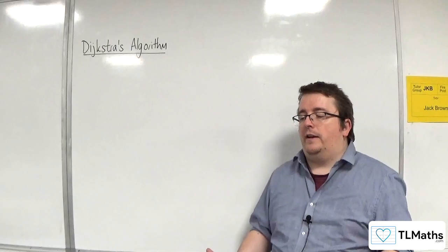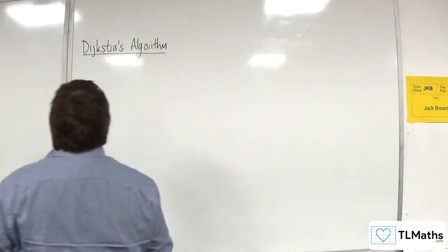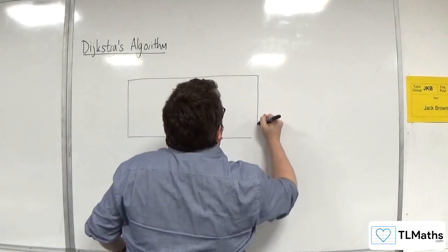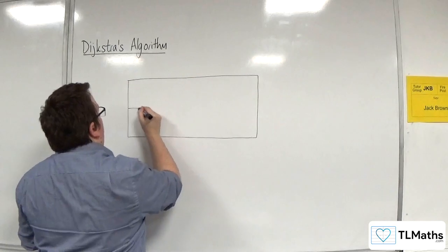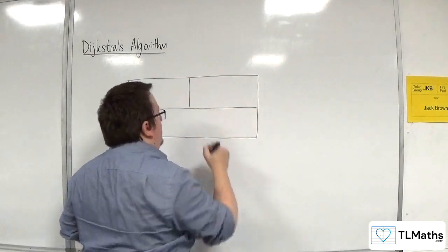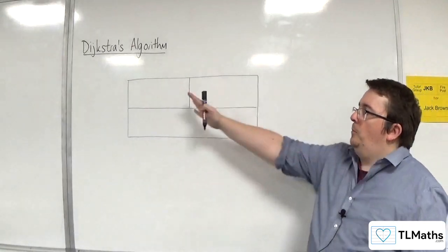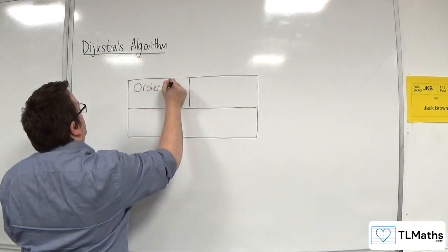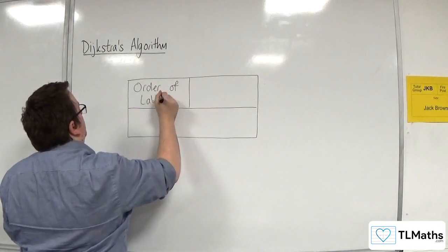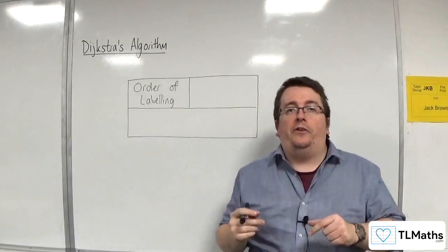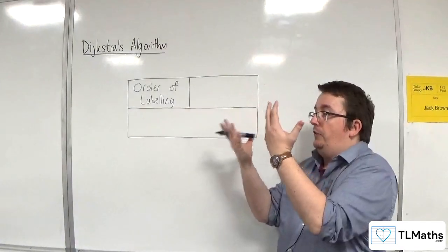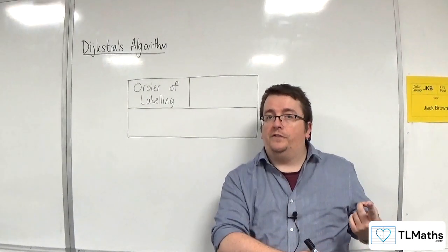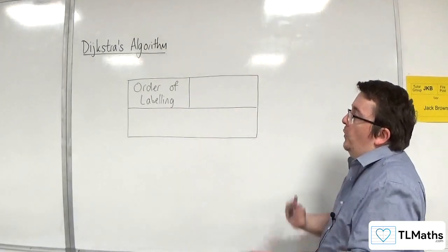In considering each vertex, we need some way of labelling it. So for each vertex, what we do is we have a box — a rectangular box that looks something like this. The top left box is where we put our order of labelling. So we're going to start off at 0, and then this will count up until we hit the final vertex, in the order that we consider them.